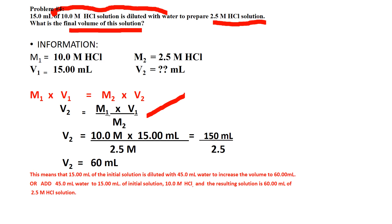Substitute the values and cancel molar: 10 times 15 gives 150, divided by 2.5 gives 60 mL. So V2 is 60 mL.